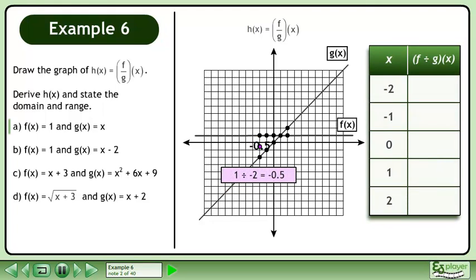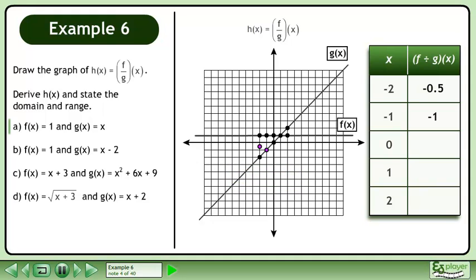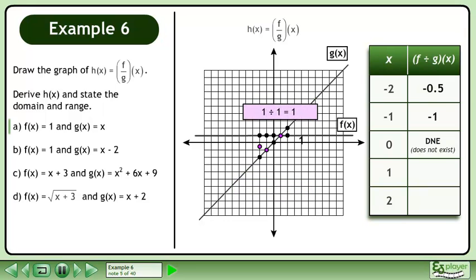Divide the y-values of the first point to get negative 0.5. Divide the y-values of the next point to get negative 1. 1 divided by 0 is undefined, so record does not exist in the table. Divide the y-values of the next point to get 1, and the final point to get 0.5.